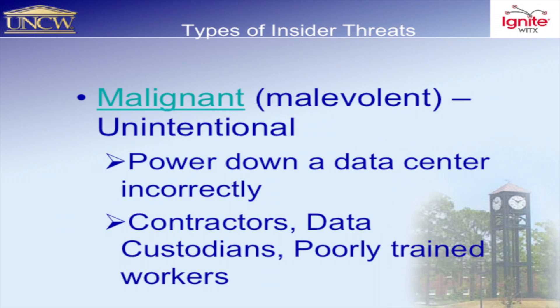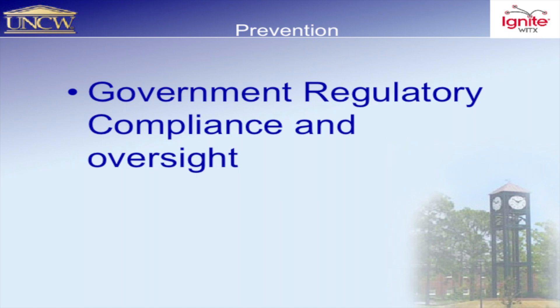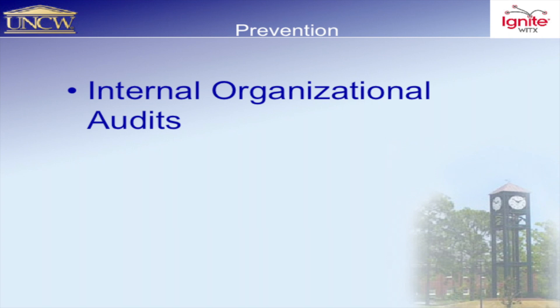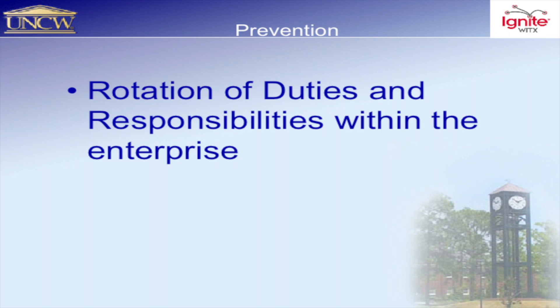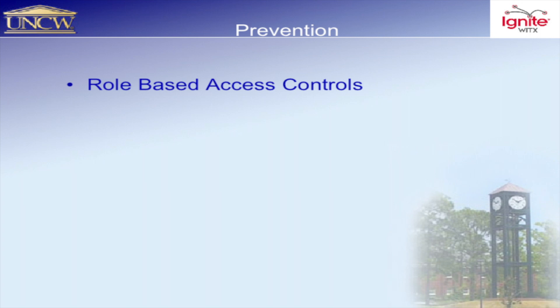These are some preventions. Regulatory compliance and oversight — people keeping eyes, big brother, on you — will keep you from trying to do sneaky things. Internal audits make you less likely to steal if somebody's keeping tabs on you. Rotation of duties: if you're a programmer in area A, you move them to area B, keeping them off guard. Separation of duties and role-based access controls — you don't have access to things you don't have a need to know. Why give you the keys to the kingdom if you only need the keys to your mailbox?